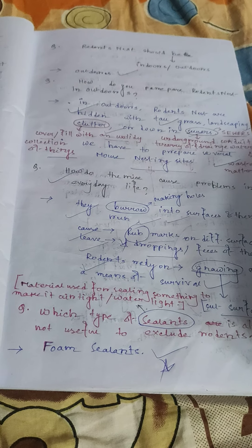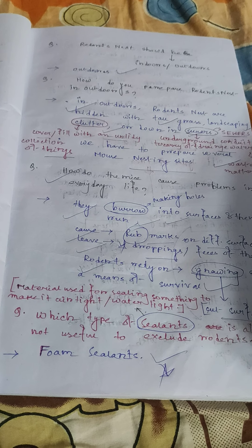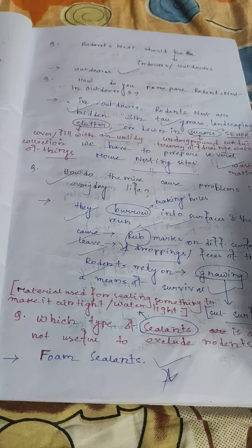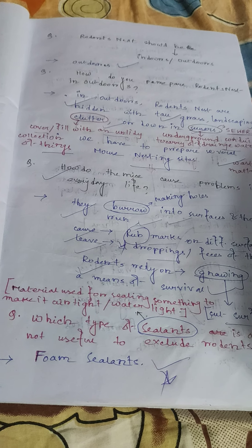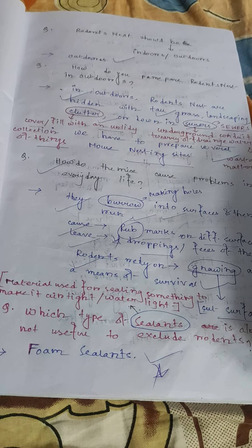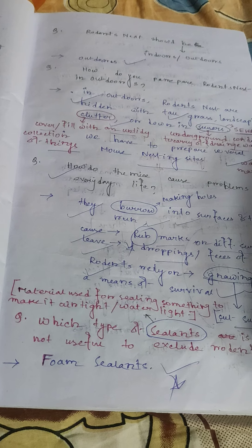Common Pest Problems: Cockroaches. Critical areas where cockroaches are found include boxes, bags, egg cases, workers' belongings, and personal items.